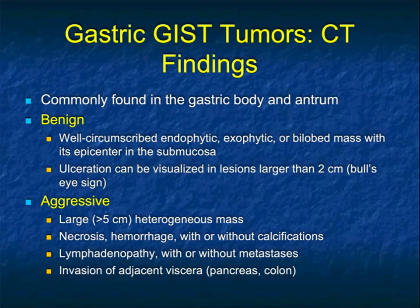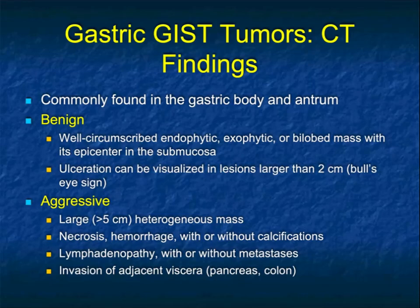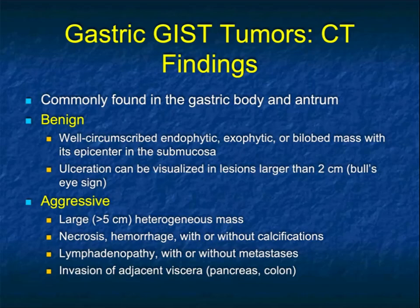CT findings of GIST tumors: they can occur anywhere in the stomach but are commonly in the body or gastric anterior region. Benign ones are well-circumscribed, endophytic or exophytic. They can be bilobed, and ulcerations can appear when larger than several centimeters — and when they ulcerate they can present with bleeding. Tumors over five centimeters are considered aggressive, and you're more likely to see necrosis or hemorrhage. These lesions can occasionally have calcifications.